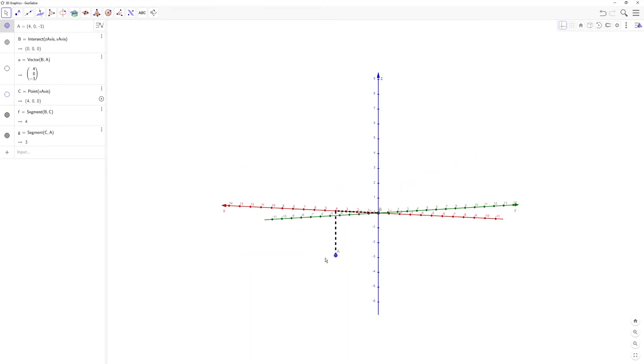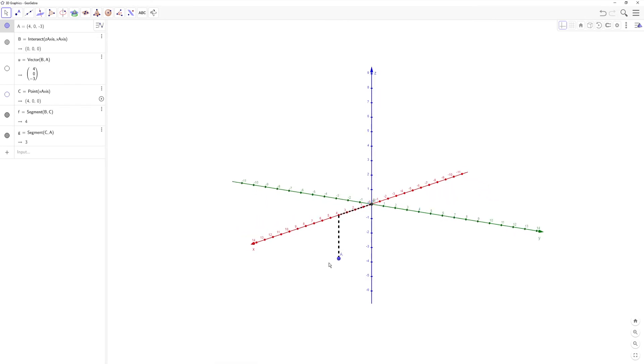4, 0, negative 3. And we can see that y is 0, because when we position it like this, so you have the z-y plane.